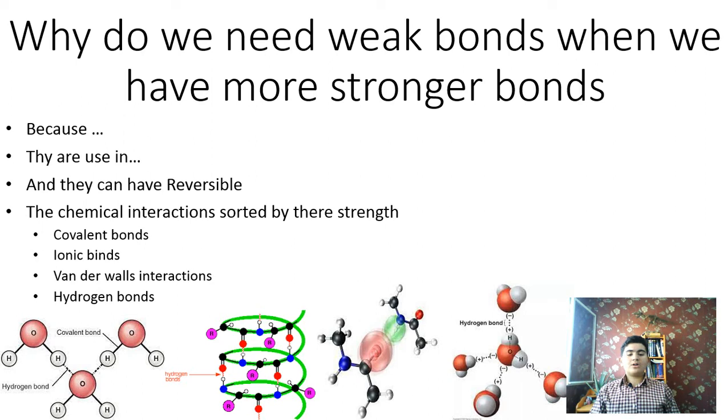There are several types of weak interactions that are important in organisms. One is the ionic bond as it exists between ions dissociated in water, which we have discussed in my previous videos. Hydrogen bonds and Van der Waals interactions are also crucial for life.